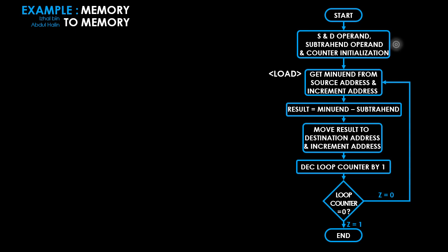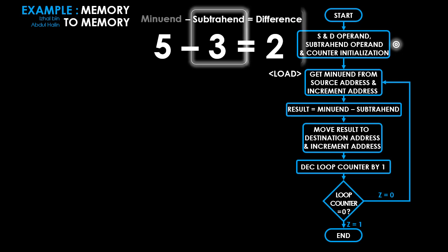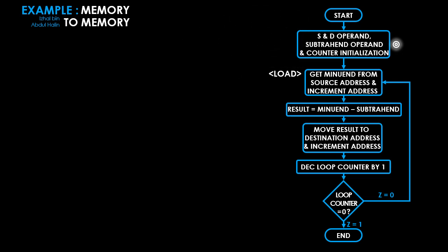The flowchart shows the algorithm for the memory-to-memory program. The first process is to initialize all operands. We will need two address registers: one for pointing to the source operand in memory (read into a data register as our minuend) and another to point to the destination operand in memory where results are stored. We also need one register to store our subtrahend. A minuend is the number that another number is subtracted from — for example, in 5 minus 3 equals 2, five is the minuend, three is the subtrahend, and two is the difference.